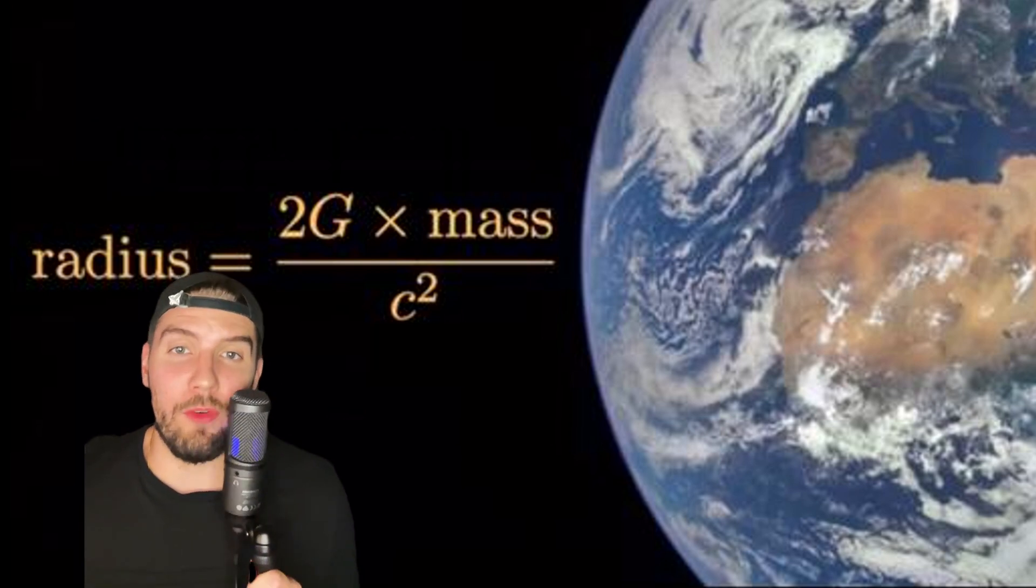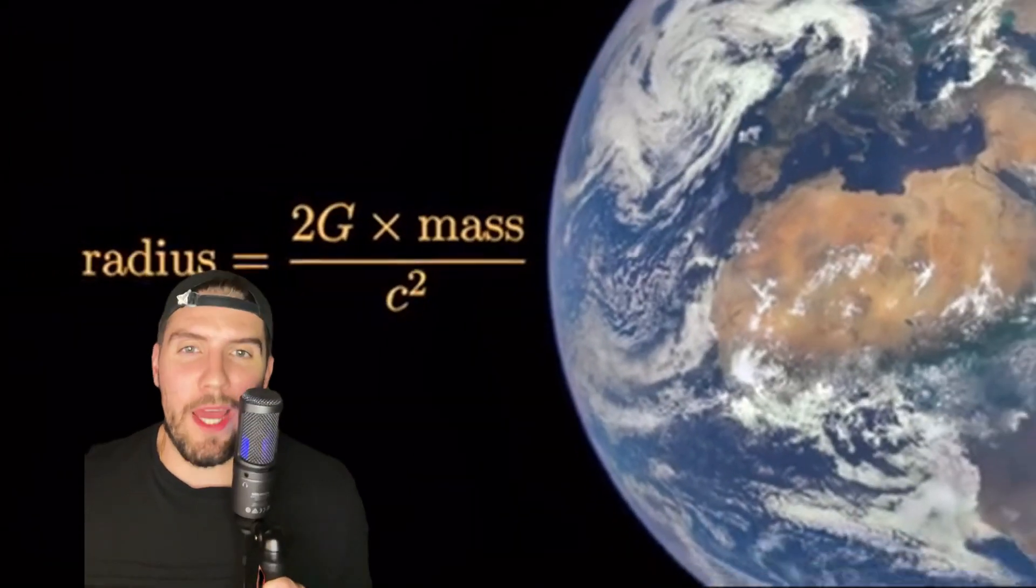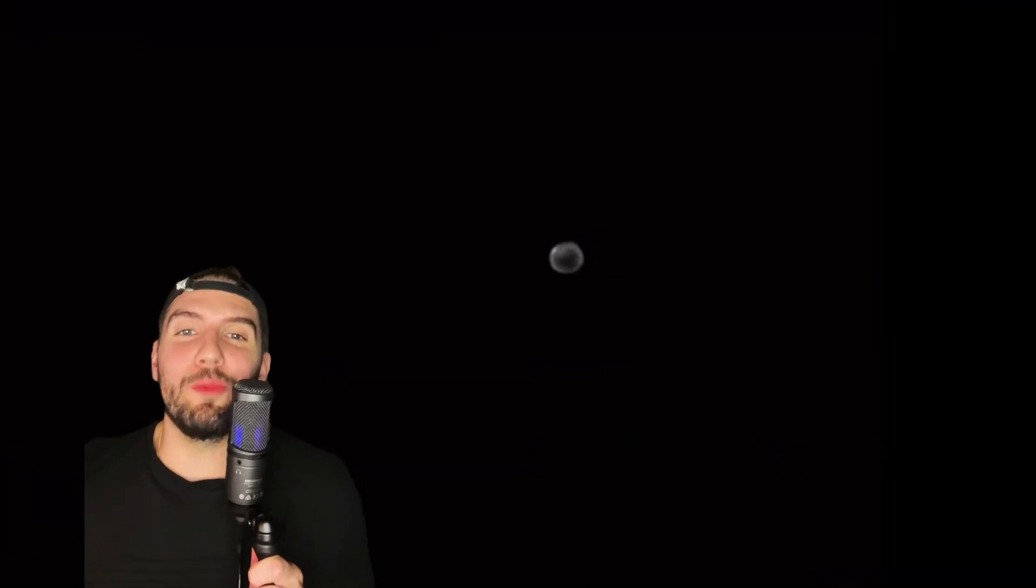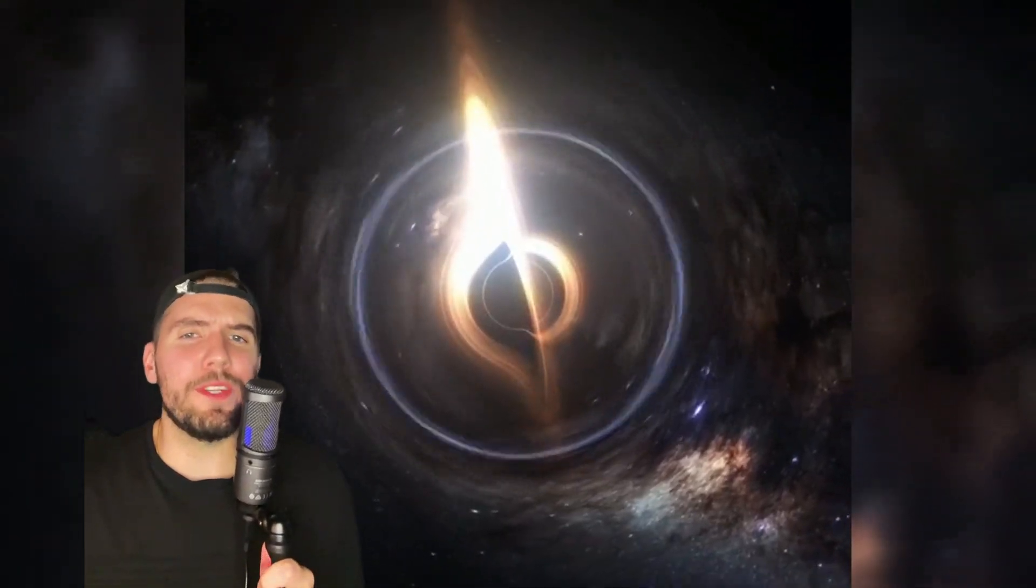For example, to make a black hole out of Earth, you would have to squeeze the entire planet into a volume the size of a blueberry. If you were somehow able to do that, that blueberry would be a black hole. Not easy, but pretty simple, right?